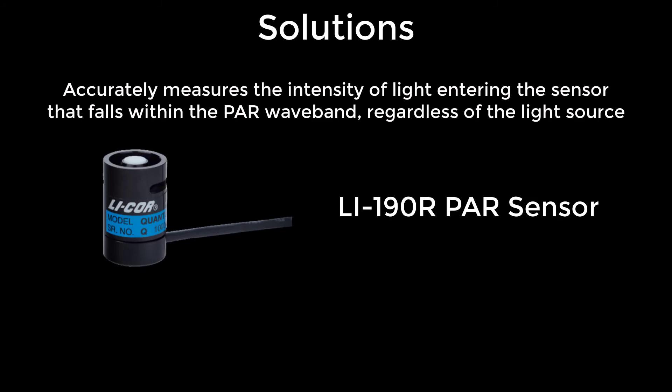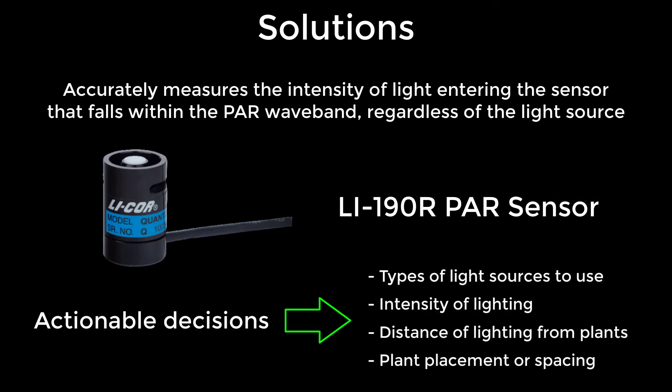For solutions, throughout the video we've been featuring the LI-190R PAR sensor manufactured by LI-COR. It very accurately measures the intensity of light and the photons that fall within that PAR wave band regardless of the light source, whether it's the sun or artificial lighting. With that, we can make actionable decisions — for example, the kind of light sources we use, whether to increase or decrease lighting, change the distance from the lights to the plants, or how we space plants in the greenhouse.